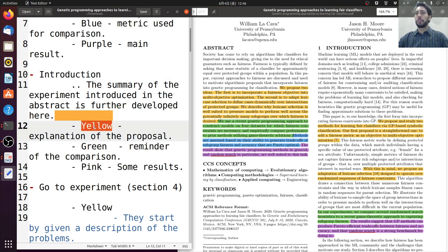So in yellow, they explain the proposal. In green, they remind us of the comparison. Randomized search heuristics, game theoretic approach. Again, connecting here to capture subgroup fairness. It was subgroup fairness here.